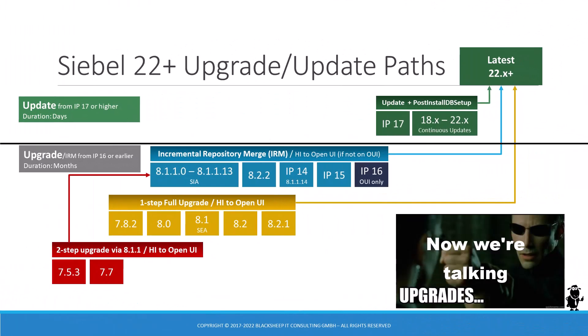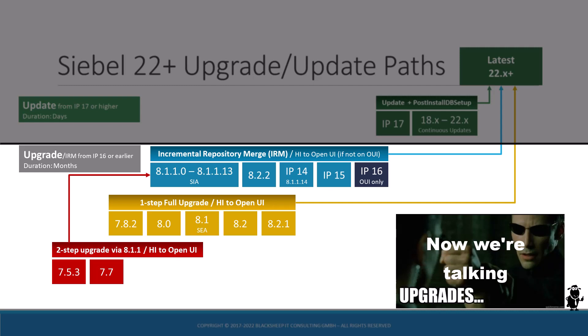What if your Siebel CRM version is Innovation Pack 16 or older? If your current version is below IP 17, you find yourself in the lower portion of the diagram, meaning you have to conduct an upgrade project to get to the latest Siebel release. The duration of a Siebel CRM upgrade project is measured in person months, sometimes person years. The project complexity and duration are tightly coupled to the number of customizations applied over the years. In a nutshell, the more time and money was spent on customizing Siebel, the more time and money will have to be spent on the upgrade.